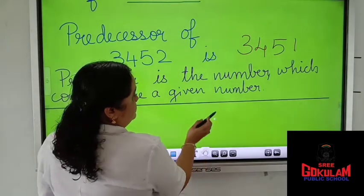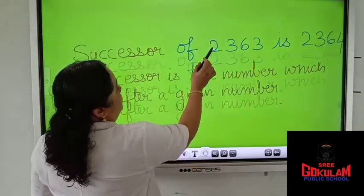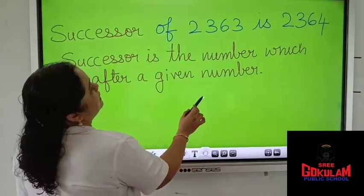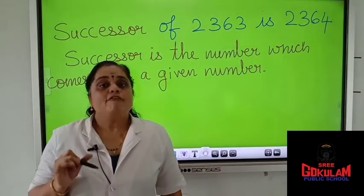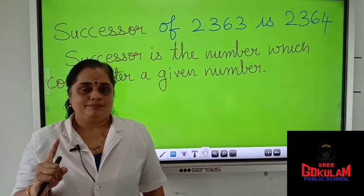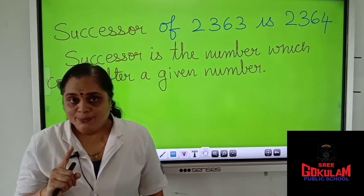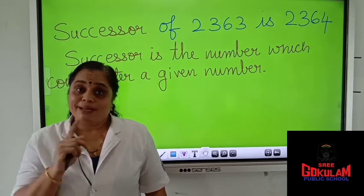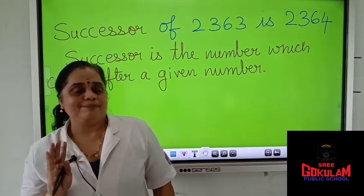Now, what is a successor? Successor is the number which comes after a given number. We call it the after number — same thing. Before number and after number, same thing only.